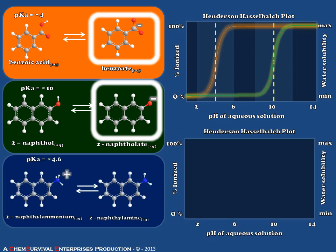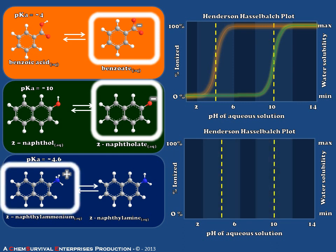But what if instead we have an organic base like 2-naphthylamine? Well, 2-naphthylamine actually becomes charged and forms 2-naphthyl ammonium when it's in very acidic conditions. In fact, the pKa of 2-naphthyl ammonium is about 4.6.